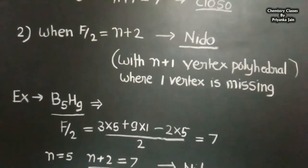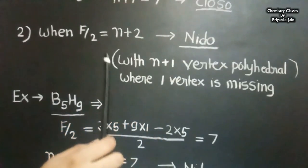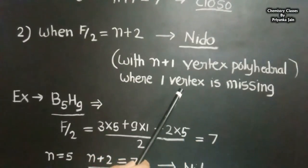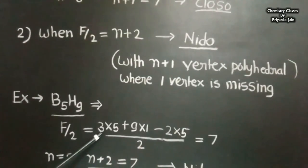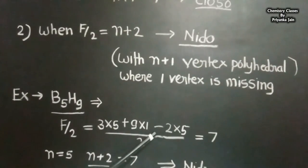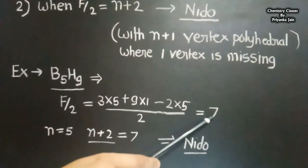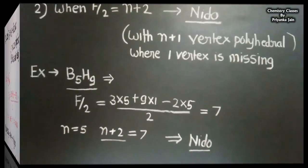When the electron pairs equal N plus 2, the compound will be nido — it has the structure of an (N+1)-vertex polyhedron with one vertex missing. For example, for B₅H₉: F/2 = (3×5 + 1×9 − 2×5) / 2 = (15 + 9 − 10) / 2 = 14/2 = 7. Here N is 5, so 7 equals N+2, and B₅H₉ has a nido structure.